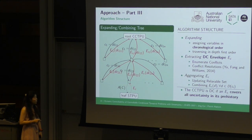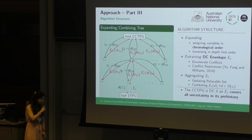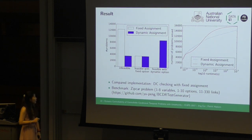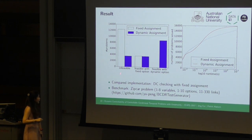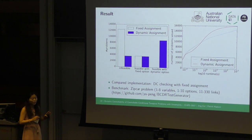These are our experimental results. We compare our implementation against a DC checking algorithm with fixed assignments. More than 12,000 tested cases are infeasible with fixed assignments, but no more than 4,000 are still infeasible with dynamic assignments. The runtime comparison shows that under a time limit, the dynamic assignment implementation even outperforms fixed assignments because the fixed-assignment implementation spends time trying to prove infeasibility.